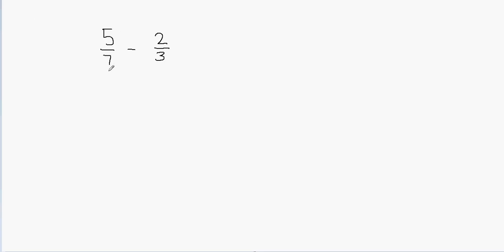Here in this fraction you see that the denominator is 7, and this fraction has a denominator of 3. So these are called unlike fractions because they have different denominators, and you can't add or subtract unlike fractions unless you convert them into like fractions. Unlike fractions have different denominators, and like fractions have the same denominators — you need the same denominators in order to add or subtract fractions.